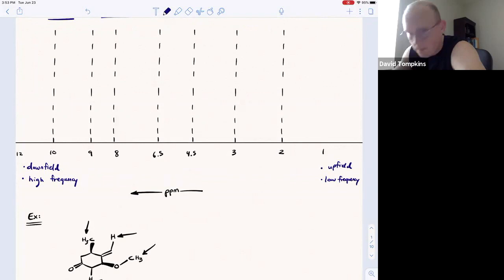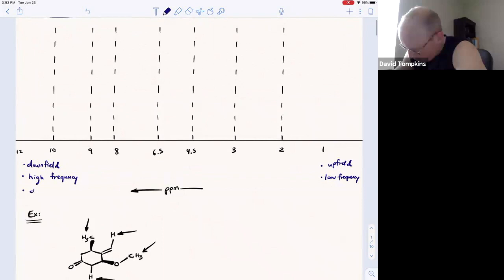Protons are downfield because they are deshielded, or they are not shielded from the magnetic field of the NMR instrument because they are electron poor. For example, being electron poor could mean the proton is near an electronegative atom, such as an oxygen or nitrogen, or the proton is near a pi bond and experiences something called anisotropy.